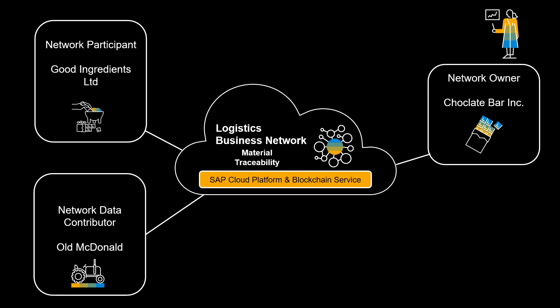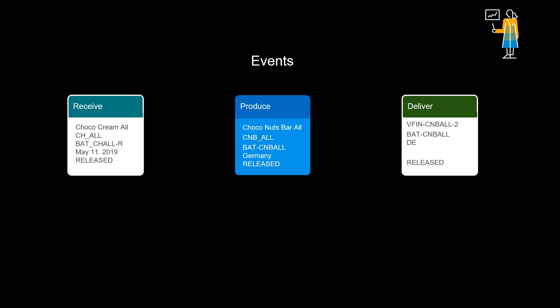As we have now learned, you can take part in Logistics Business Network Material Traceability option as a network owner, a network participant, or a network data contributor. The Material Traceability option is based on events that represent activities in the real world, for example, the delivery of a product batch.